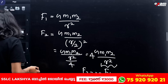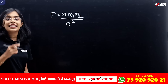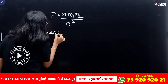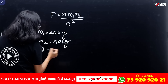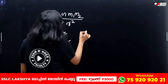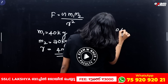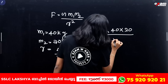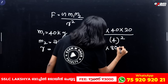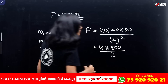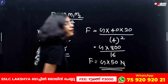Let's take a look. Force F = G M1 M2 divided by R squared. M1 = 40 kg, M2 = 20 kg, distance R = 4 meters. Substituting: G × 40 × 20 divided by 4 squared. That is G × 800 divided by 16, which equals G × 50. So force F = 50G Newtons.